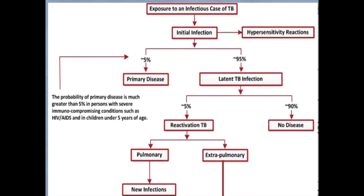When you are exposed to the TB bacilli from an infected person, you breathe it in and become infected. You then develop primary disease where you have active TB. Most people fight off the infection and the TB bacilli set up a latent infection, which can lay dormant for many years. If you do progress to active TB, you can get pulmonary TB, extra-pulmonary TB, or both.